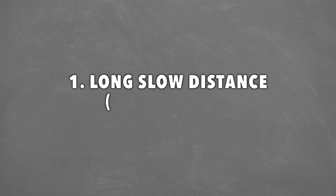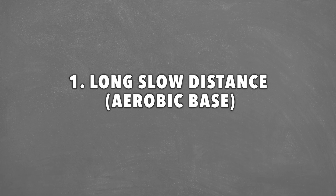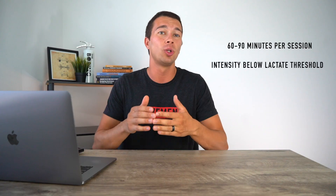The first is long slow distance work, or aerobic base training. This typically requires the highest amount of volume and we typically don't see very good benefits unless we get to at least 60 to 90 minutes per session. Importantly, this training has to be done at a low enough heart rate that it's not taxing and fatiguing — we want to be below the anaerobic or lactate threshold. For most athletes, aerobic base training should be performed at a heart rate of around 120 to 150 beats per minute: younger athletes toward the top end, older athletes toward the lower end.